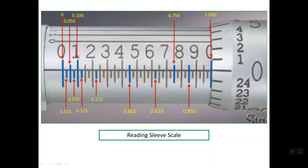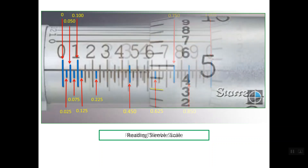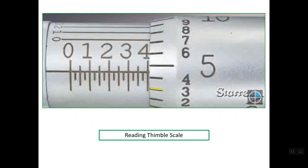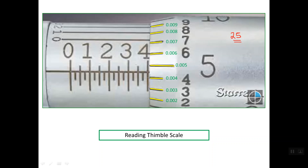Now we should understand how to read the lines on the thimble scale. For any inch micrometer, the number of graduations on the thimble scale is 25 graduations. The edge of the thimble is divided equally into 25 partitions, and the order of each line is already shown. For example, line number 2 is read as 0.002 of an inch, line number 3 is 0.003, line number 4 is 0.004, and so on up to line number 9, which is 0.009.